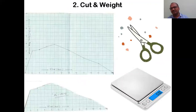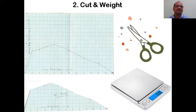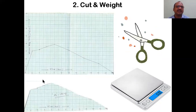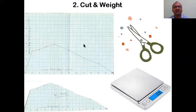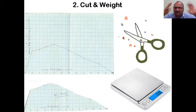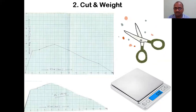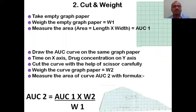The second method is the cut and weight method. First, you plot the curve - time on the x-axis versus concentration of drug in plasma on the y-axis - on graph paper. Then with the help of scissors, you cut along the curve. After cutting, you take a digital balance and weigh the cut paper. A digital balance and scissors are compulsory for this method.